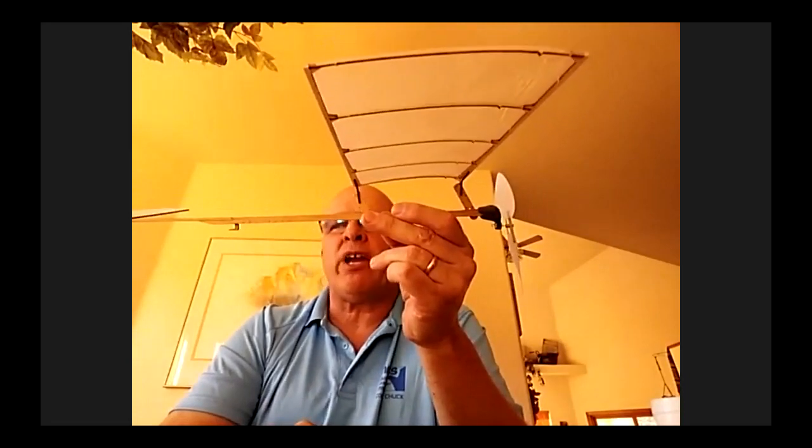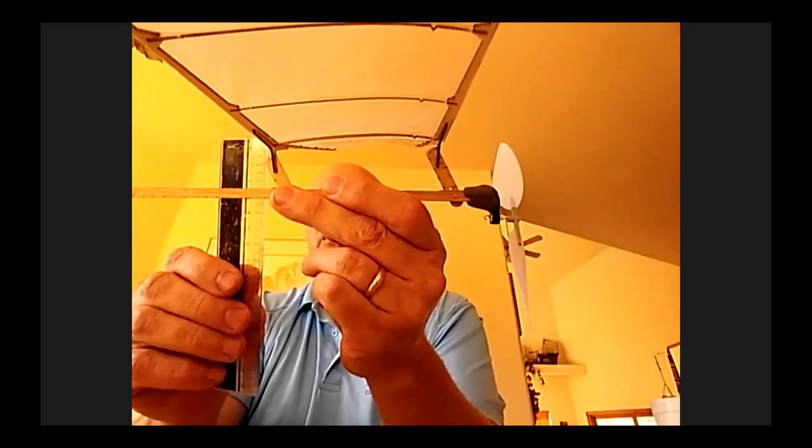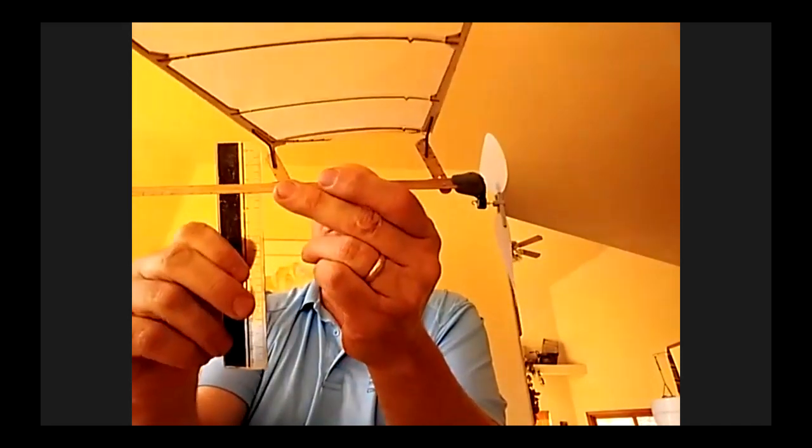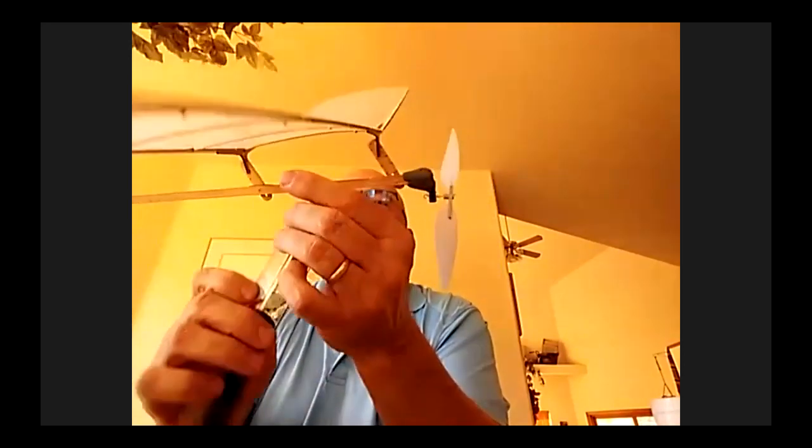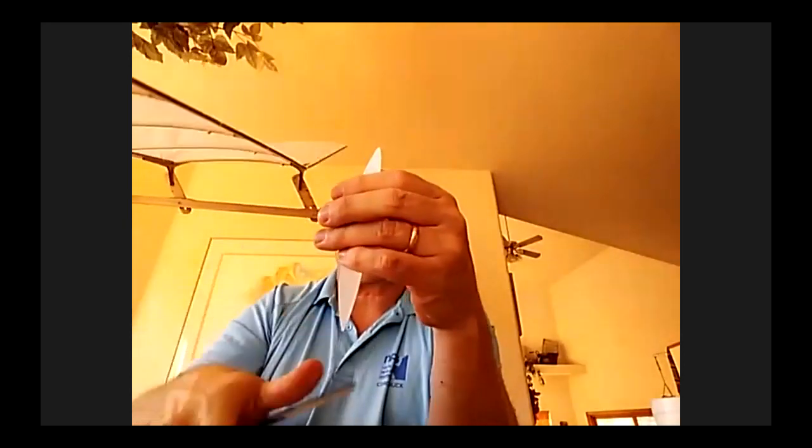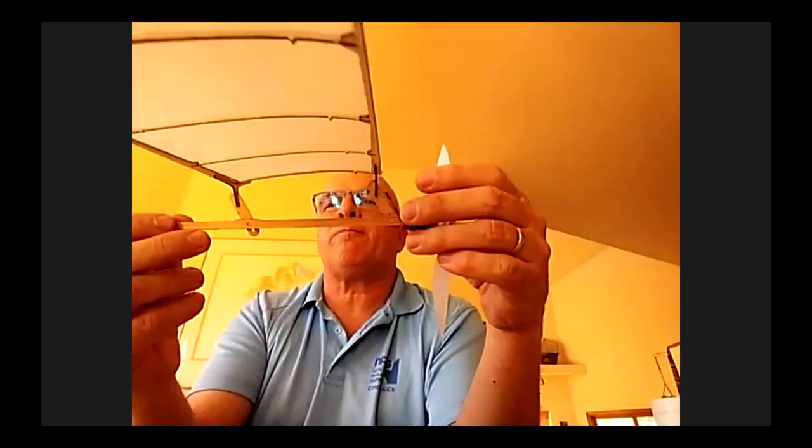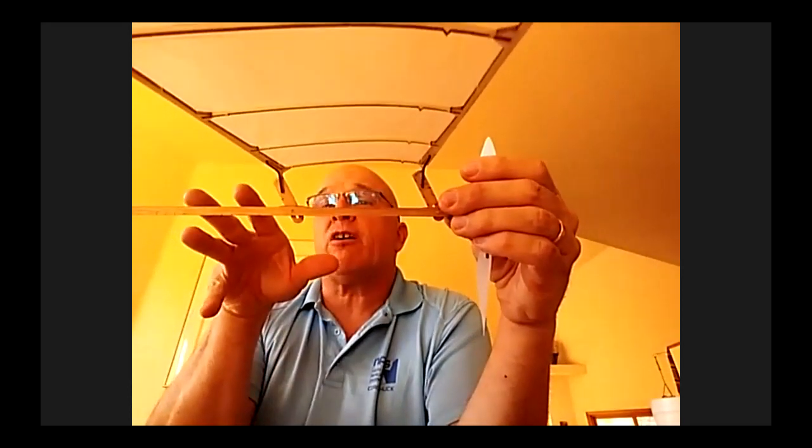On the planes this year, we found that a starting point for decalage would be between three and five millimeters. You take your millimeter scale and measure from the bottom of the wing to the bottom of the motor stick. I always measure bottom to bottom. This is 33 millimeters on the rear post and about 38 millimeters on the front post. So we've got a five millimeter difference from the front of the wing to the back of the wing. That's a good starting point.